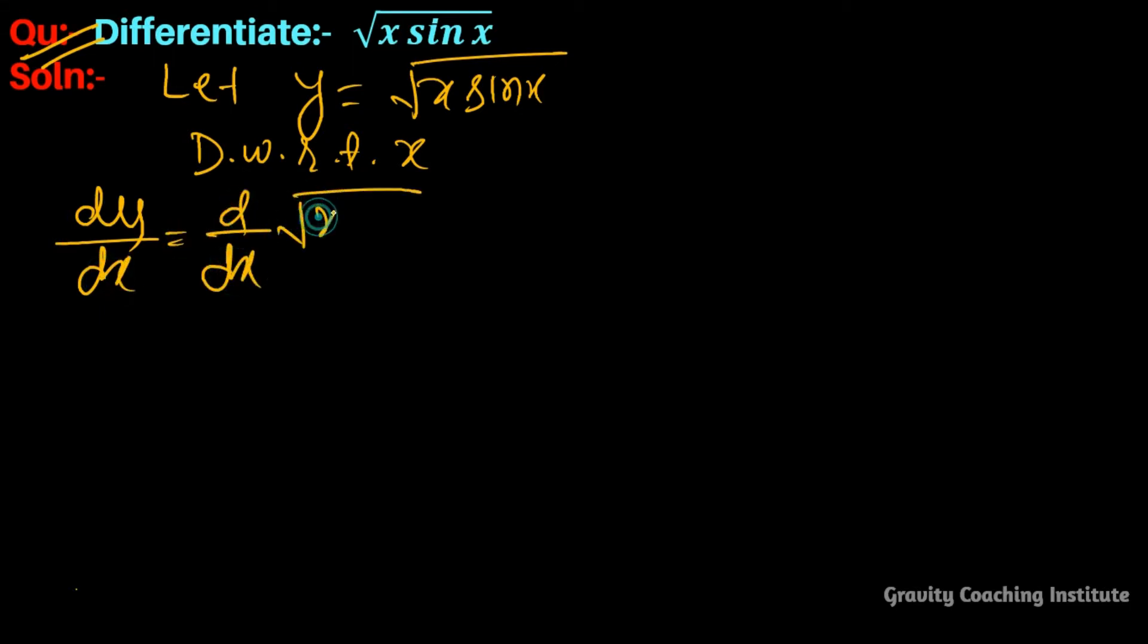Question: Differentiate √(x sin x). So let y equal to √(x sin x). Differentiate with respect to x. So dy/dx equals d/dx of √(x sin x). Now we use the general rule.